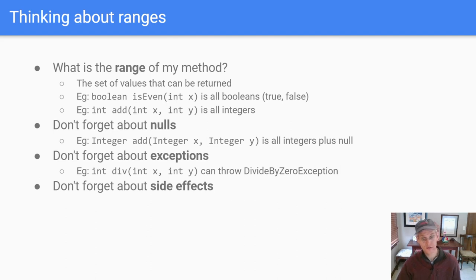Now switching to ranges. Ranges is what comes out of your method, what is returned by your method. Ask yourself, what is the range of my method? And it's the set of values can be returned. So we're going to look at those same methods here. So if you had the isEven method that returns a Boolean, the range of the method is all Booleans, which is just true and false. And similarly for add, if add is returning an integer, the range is all integers.